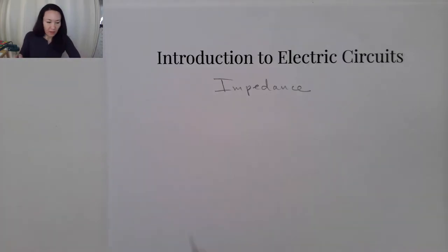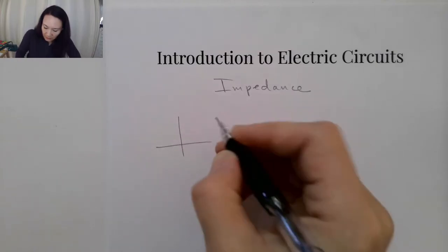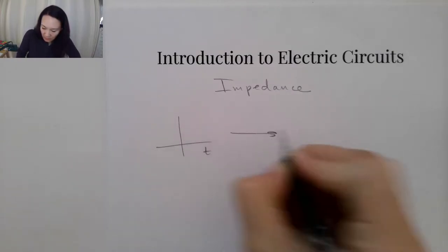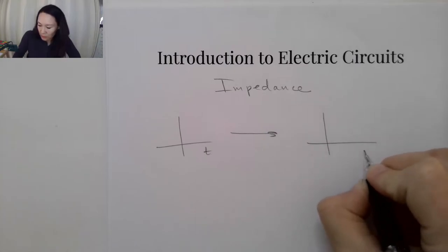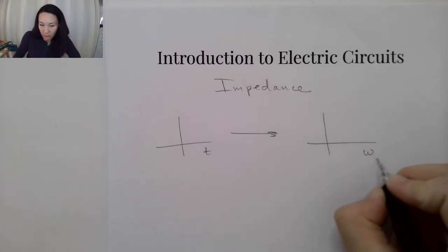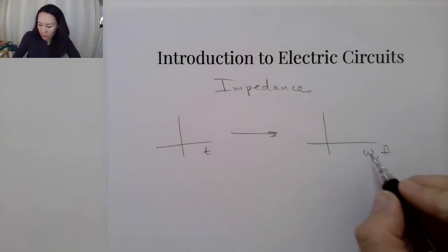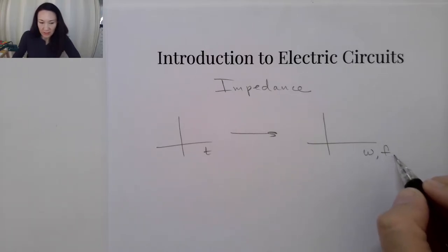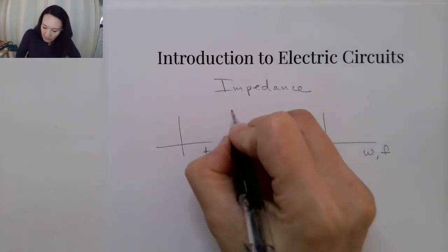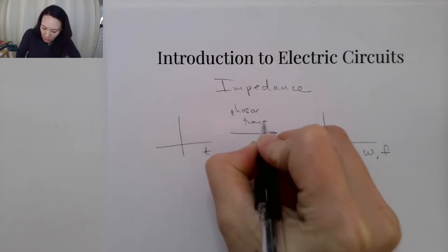In the last lecture we talked about the phasor transform that would take a function that was in the time domain and transform it to the frequency domain. So this would be a function of omega, or just frequency, where omega is angular frequency in radians per second, and regular frequency is in cycles per second. This is done by the phasor transform.